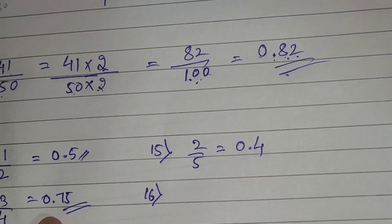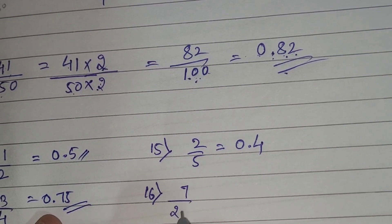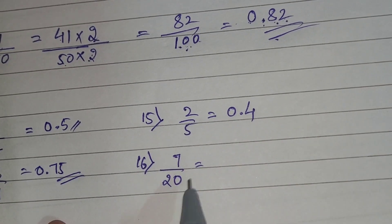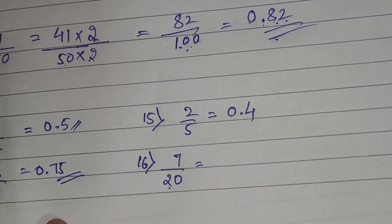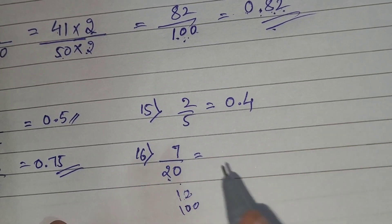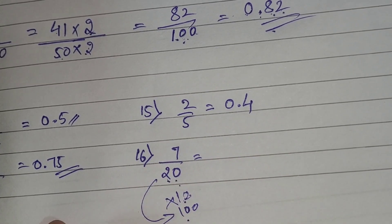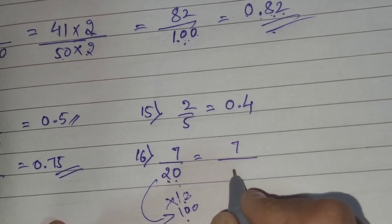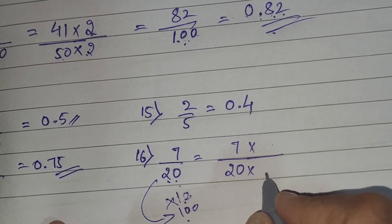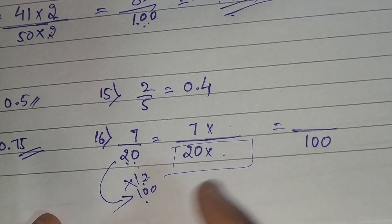Now let's take the 16th example: 7 by 20. We haven't solved this one yet. We need to convert the denominator — should we make it 10 or 100? Since 20 is greater than 10, multiplying by any number won't give us 10. But there is a chance to get 100. So we need to convert 20 into 100.